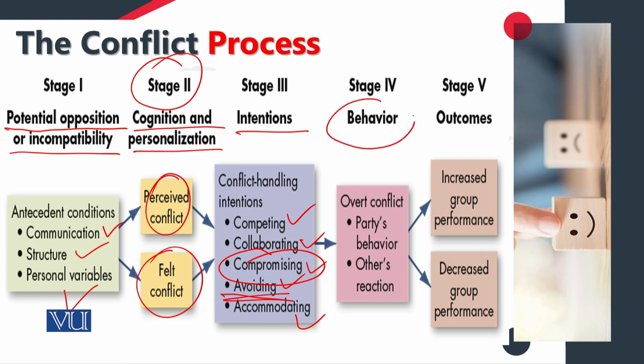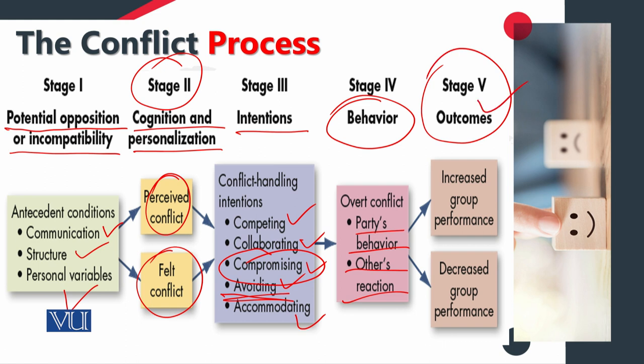Then we have stage four, which is about behavior. After examining intentions, the behavior exhibited during a conflict situation becomes the general reaction. How the other party behaves and what course of action is taken will shape what comes next. This leads us to stage five, which is the outcome.